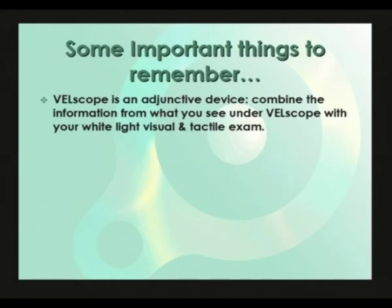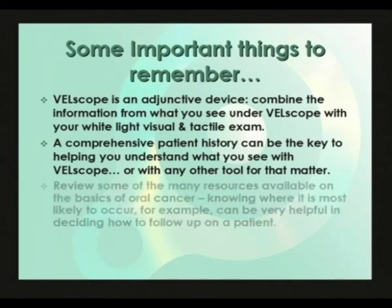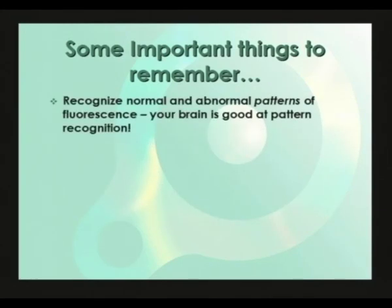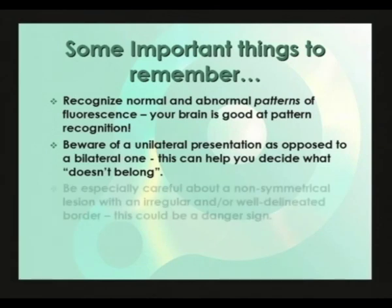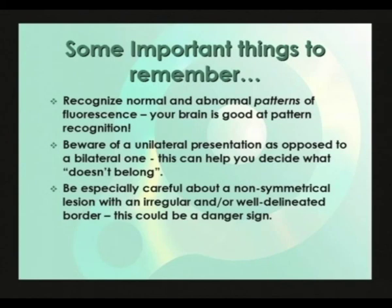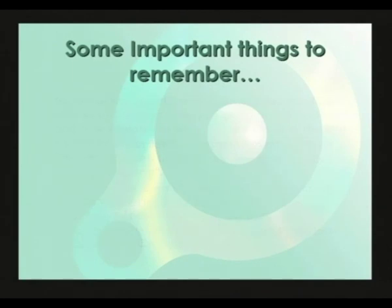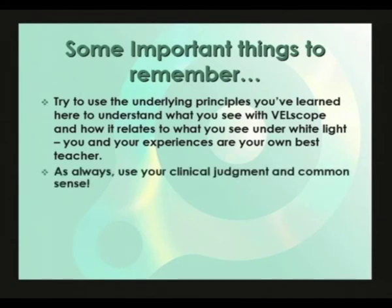VELscope is an adjunctive device — combine information from what you see under VELscope with your white light visual and tactile exam. A comprehensive patient history can be the key to understanding what you see. Review resources on the basics of oral cancer — knowing where it is most likely to occur can be very helpful. Recognize normal and abnormal patterns of fluorescence. Beware of a unilateral as opposed to bilateral presentation. Be especially careful about a non-symmetrical lesion with an irregular and well-delineated border — this could be a danger sign. Excess blood in the tissue will nearly always look dark under VELscope. Use your clinical judgment and common sense.